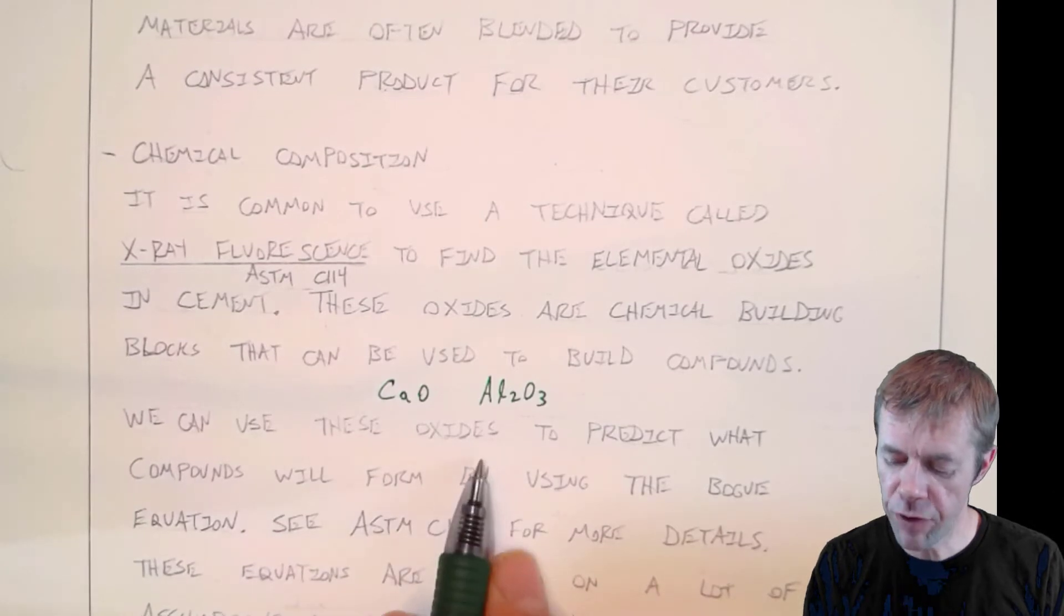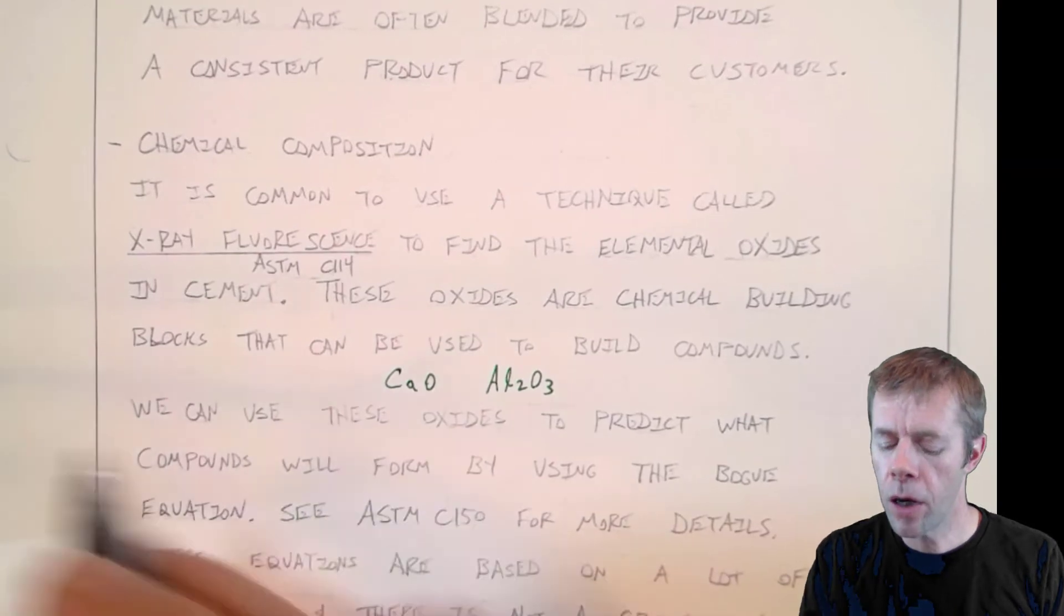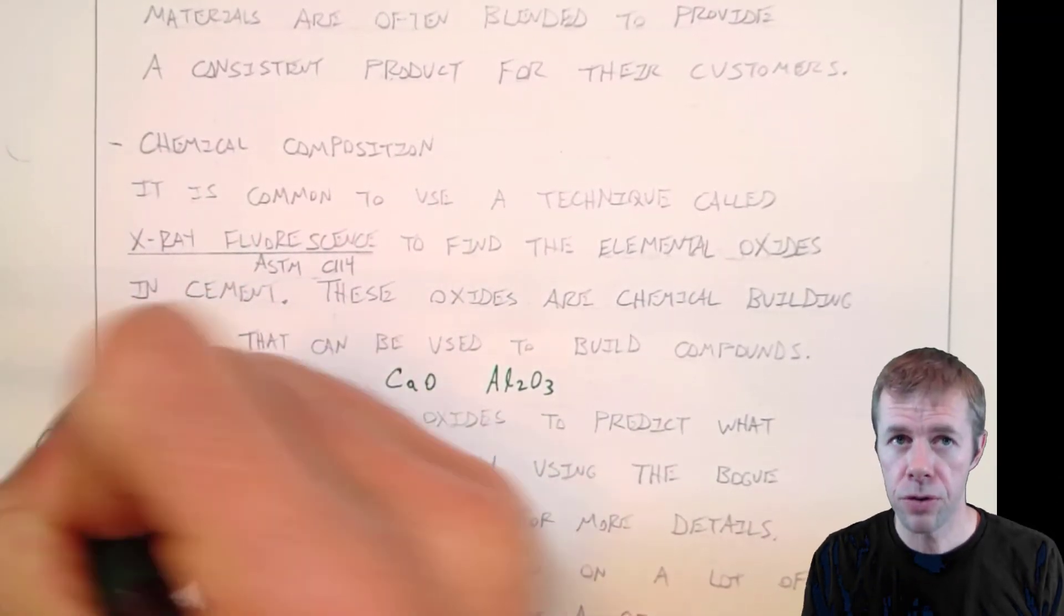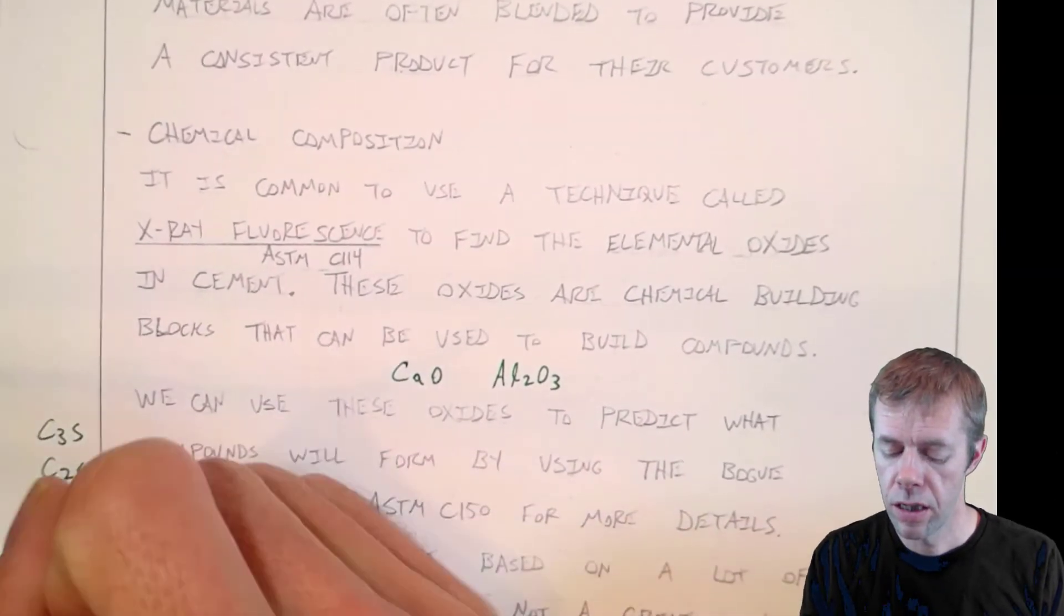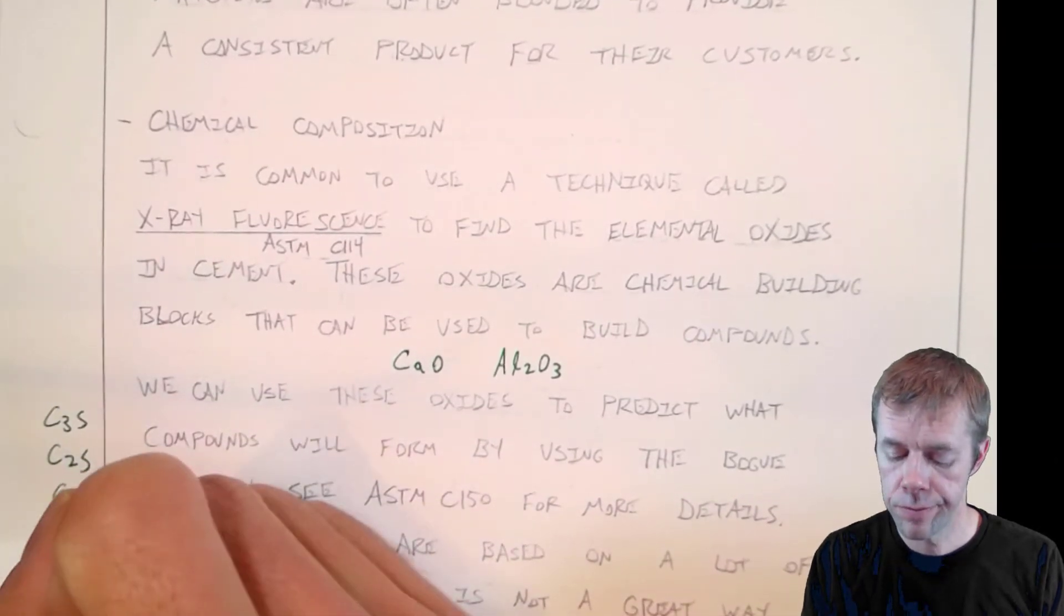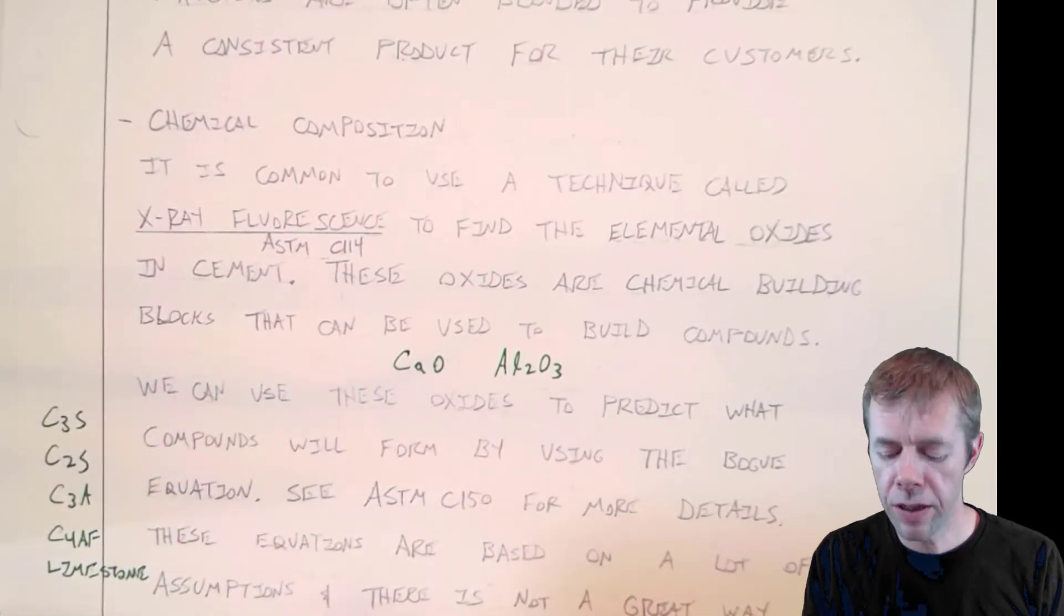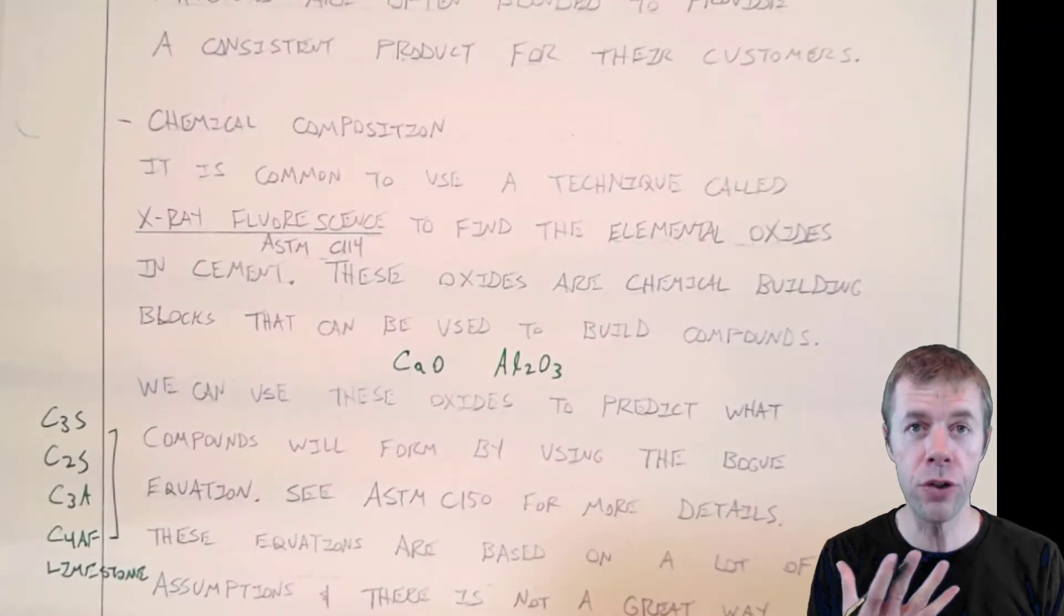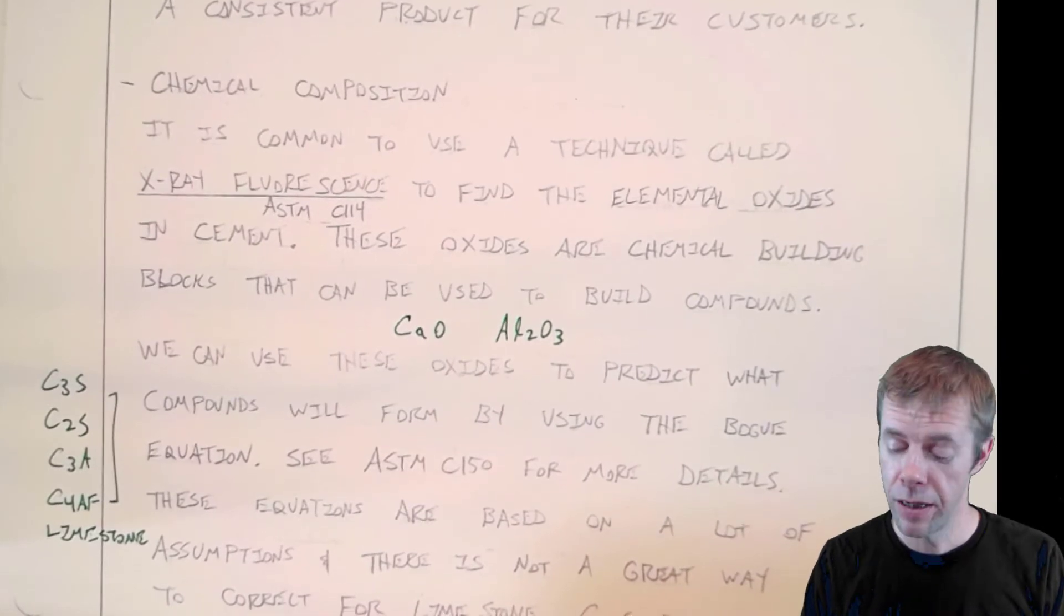We use these oxides information to actually predict what compounds. The compounds are C3S, C2S, C3A, C4AF, and then our friend limestone. We're trying to predict these. There's a big equation to do it by this great guy named Bogue. He's an old guy. He's dead. But thank you, Bogue, for coming up with the equation because we've used your equation to death.